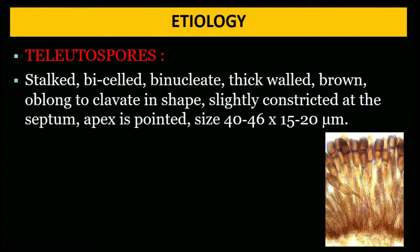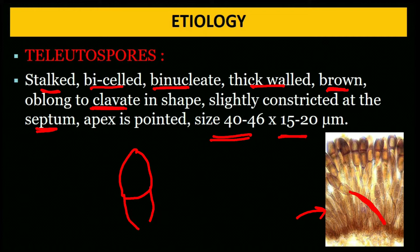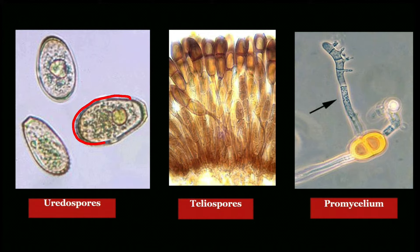Teliospore is also stalked, two-celled, binucleate, thick-walled, brown in color, oblong to clavate in shape, slightly constricted at the septum, apex is pointed, and size is 40–46 µm in length and 15–20 µm in width. The tip is pointed and the wall is thick.